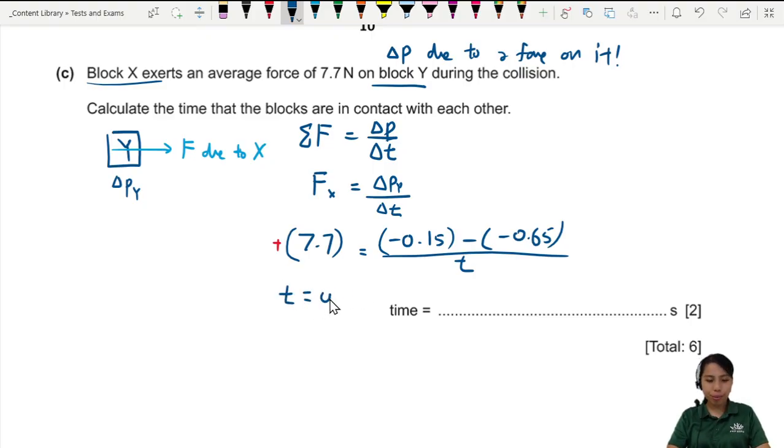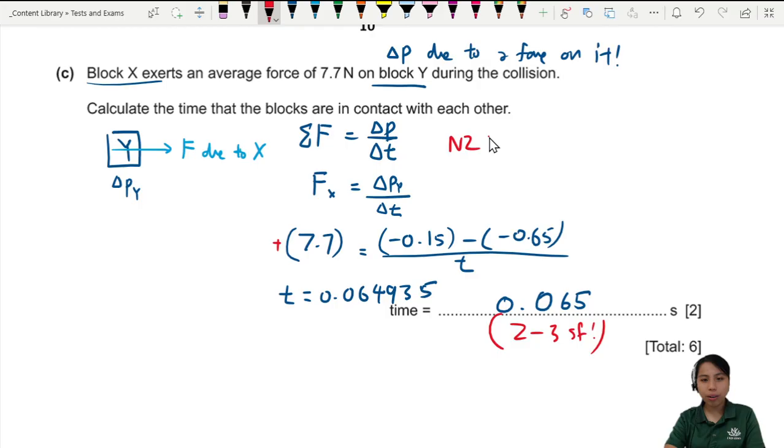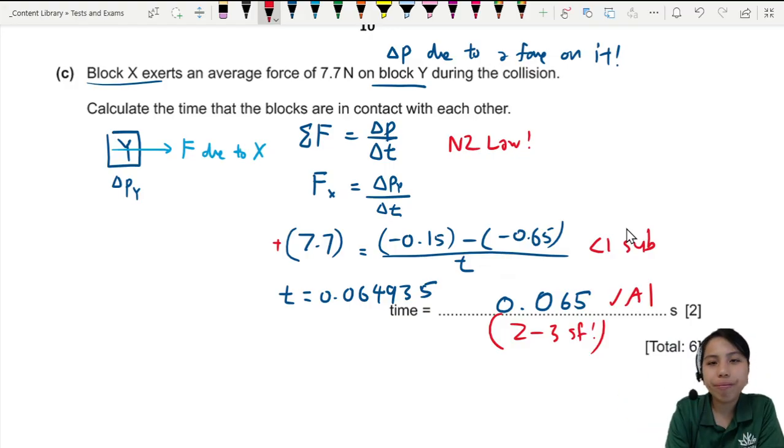Okay, so time here will be 0.064935, why not? Right, and you can round it off to 0.065, keep 2sf at least. Okay, so this is Newton's second law, good revision of this. If you sub in the correct values, that's a mark to show your working, and one more mark for final answer correct sf and all. Right, that is all for this question for momentum.